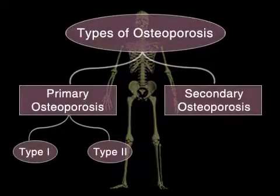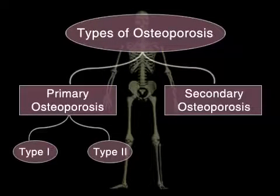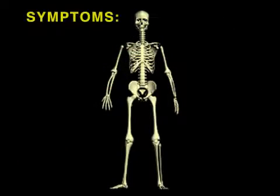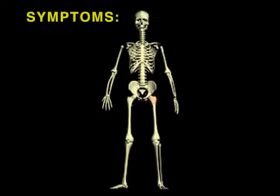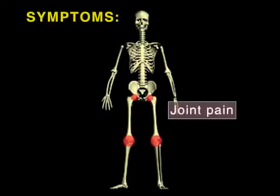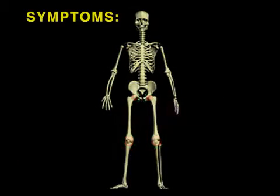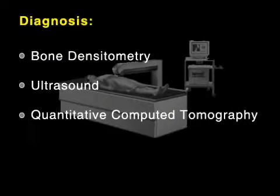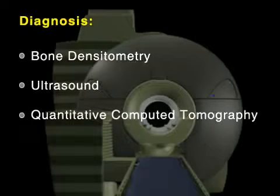There are two types of osteoporosis: primary and secondary osteoporosis. Primary osteoporosis is in turn divided into type 1 and type 2. Symptoms of osteoporosis are swelling and joint pain, fracture, disfigurement and debilitation, and kyphosis.